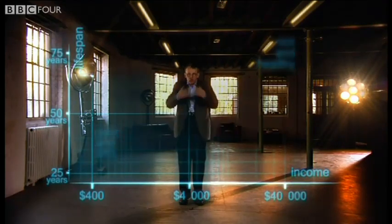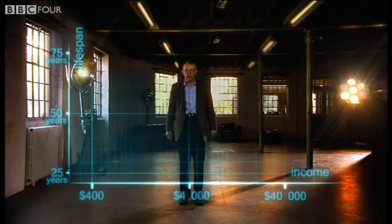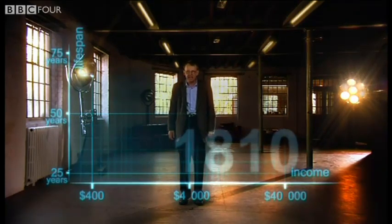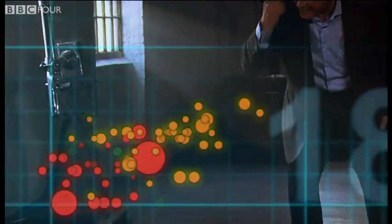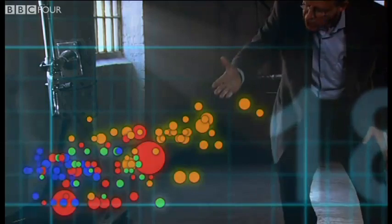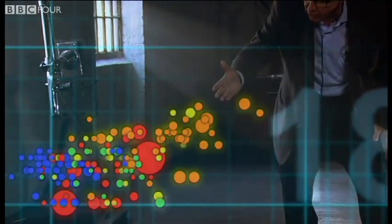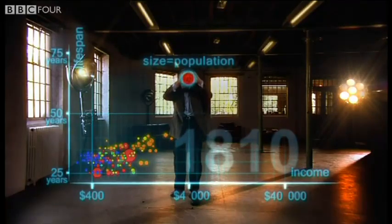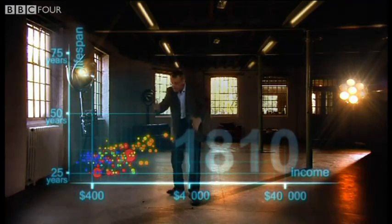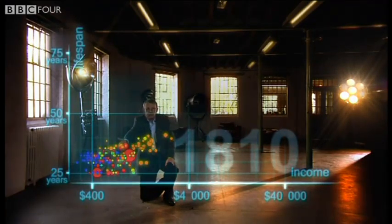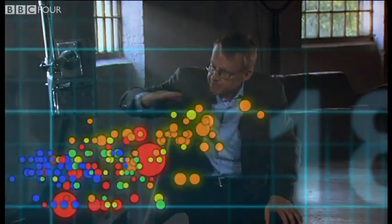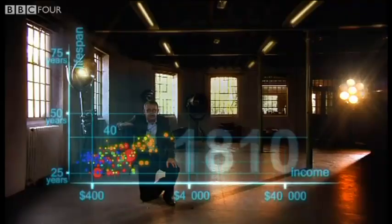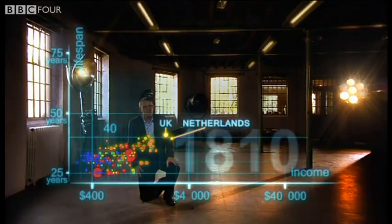Now I'm going to show you the world 200 years ago in 1810. Here come all the countries — Europe brown, Asia red, Middle East green, Africa south of Sahara blue, and the Americas yellow. The size of the country bubble shows the size of the population. In 1810 it was pretty crowded down there — all countries were sick and poor. Life expectancy was below 40 in all countries, and only the UK and the Netherlands were slightly better off, but not much.